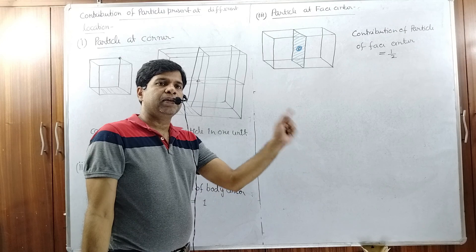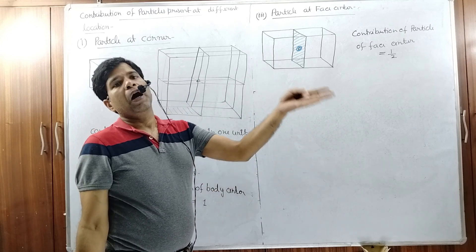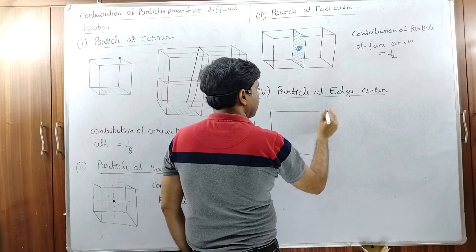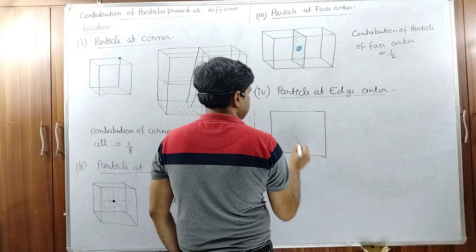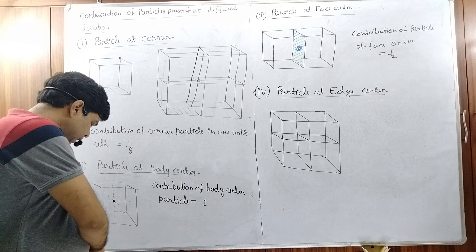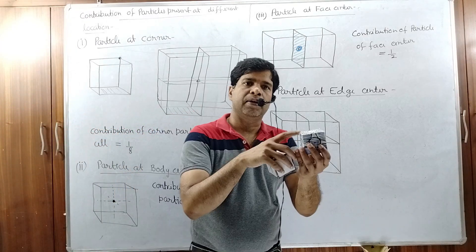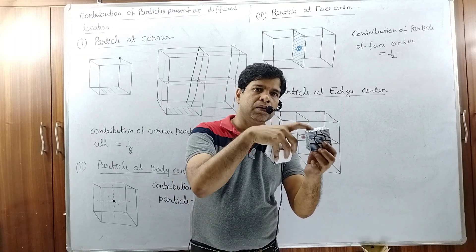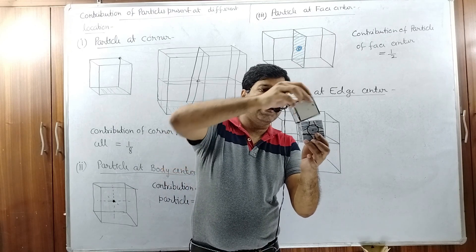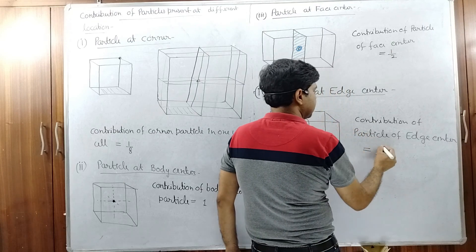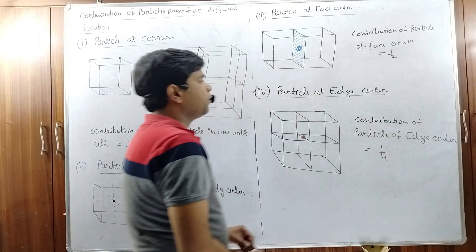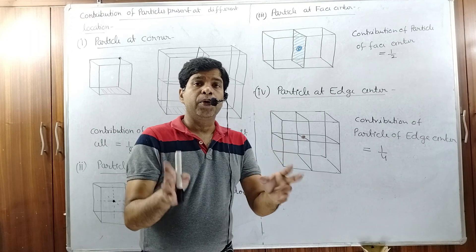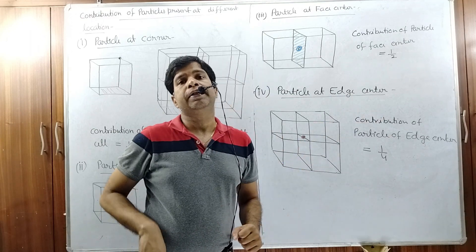For a particle at the edge center, consider four unit cells meeting at one edge. If a particle is present at that edge, it is present in box number one, box number two, box number three, and box number four. The contribution of an edge center particle is 1/4 per unit cell.